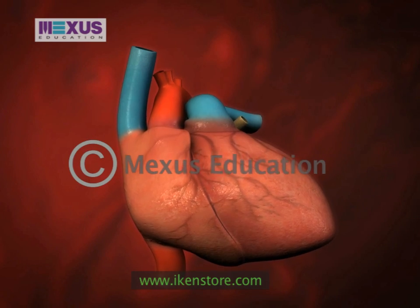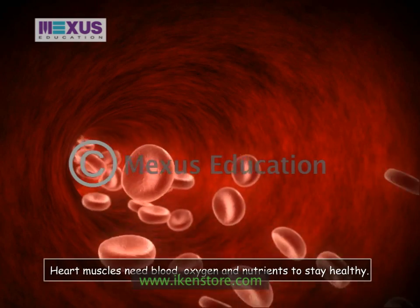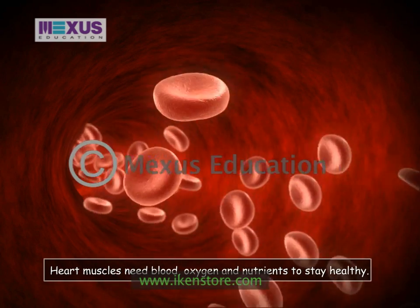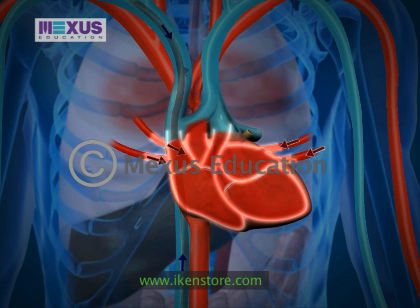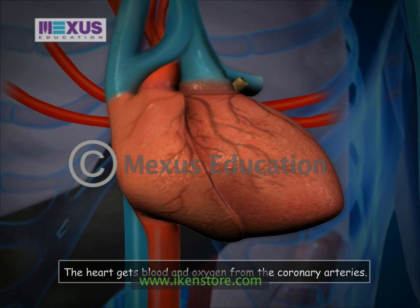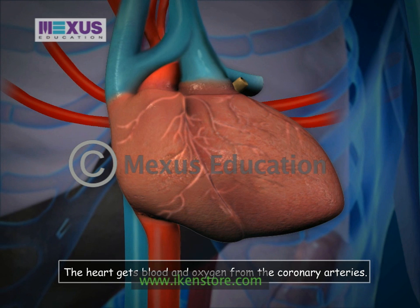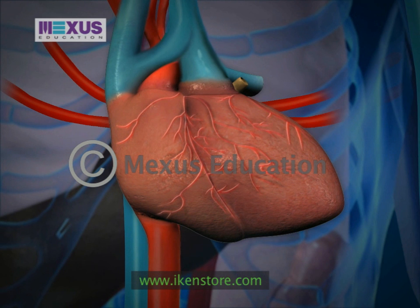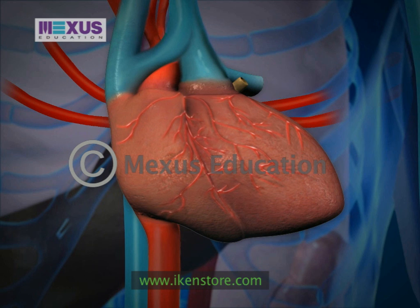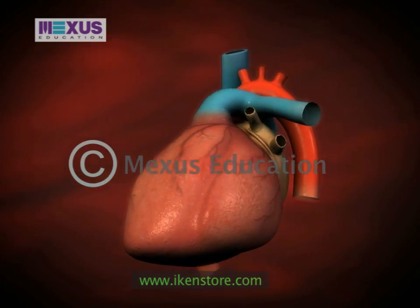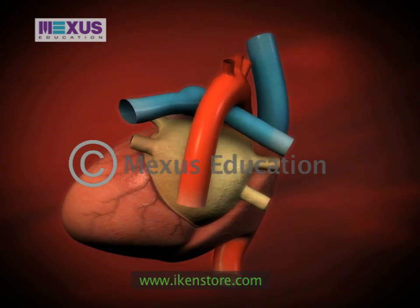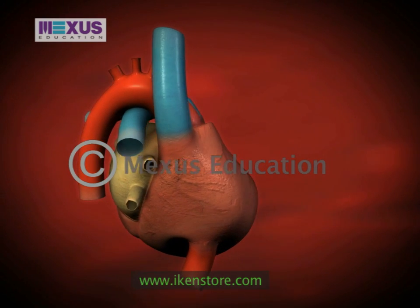Like all other tissues in your body, the heart muscles need blood, oxygen, and nutrients to stay healthy. But the heart doesn't get oxygen from the blood that flows through its chambers — instead, it gets blood and oxygen from the coronary arteries, which wrap around the outside of the heart. The coronary arteries branch several times so that they can reach your entire heart. Since the heart muscles never rest, it needs a constant supply of blood and oxygen, so it's important that blood can easily flow through all the branches of the coronary arteries.